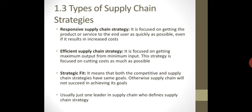پہلی ہے responsive اور دوسری ہے efficiency۔ Responsiveness — simply اس کے لفظ کے اندر ہی اس کا meaning ہے — جلدی respond کرنا consumer demand کو، جو وہ requirement اس کی ہے، جو وہ چیزیں چاہ رہا ہے۔ Overall supply chain اتنی flexible ہو کہ جلد از جلد respond کیا جائے consumer کو۔ اگر cost بھی increase ہو رہی ہے تب بھی آپ نے consumer کی requirement کے لحاظ سے اسے product دینا ہے۔